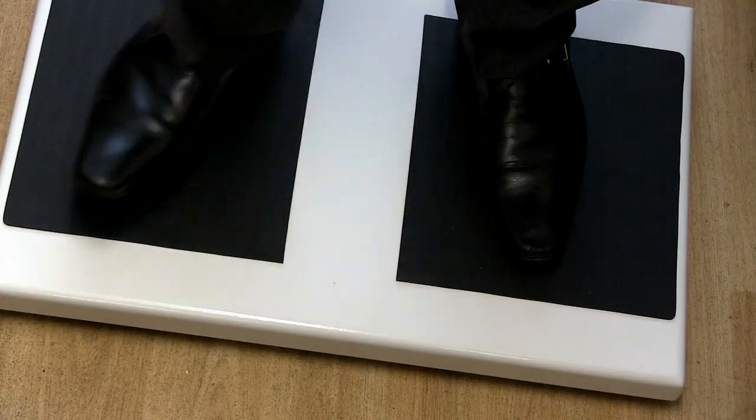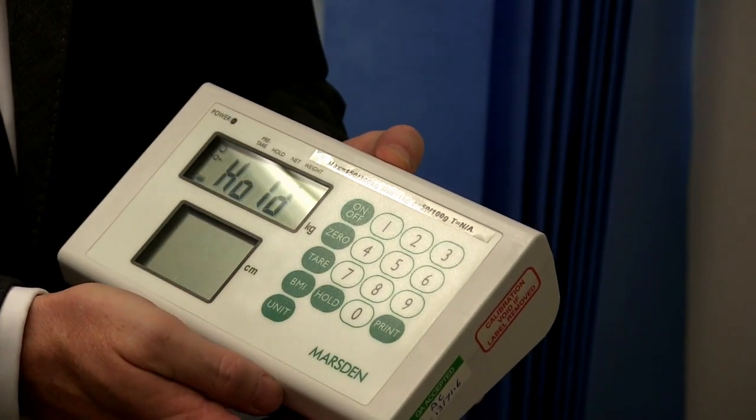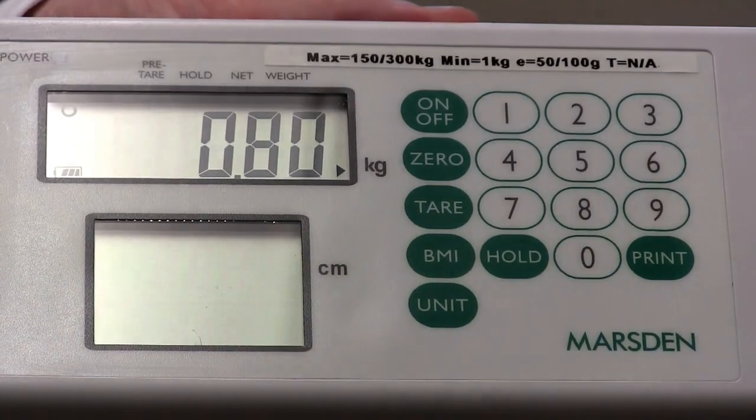Using the hold feature, the M530 allows you to stabilize the weight of the patient while the patient is being weighed. The hold key can either be pressed before they stand on the scale or whilst stood on it.